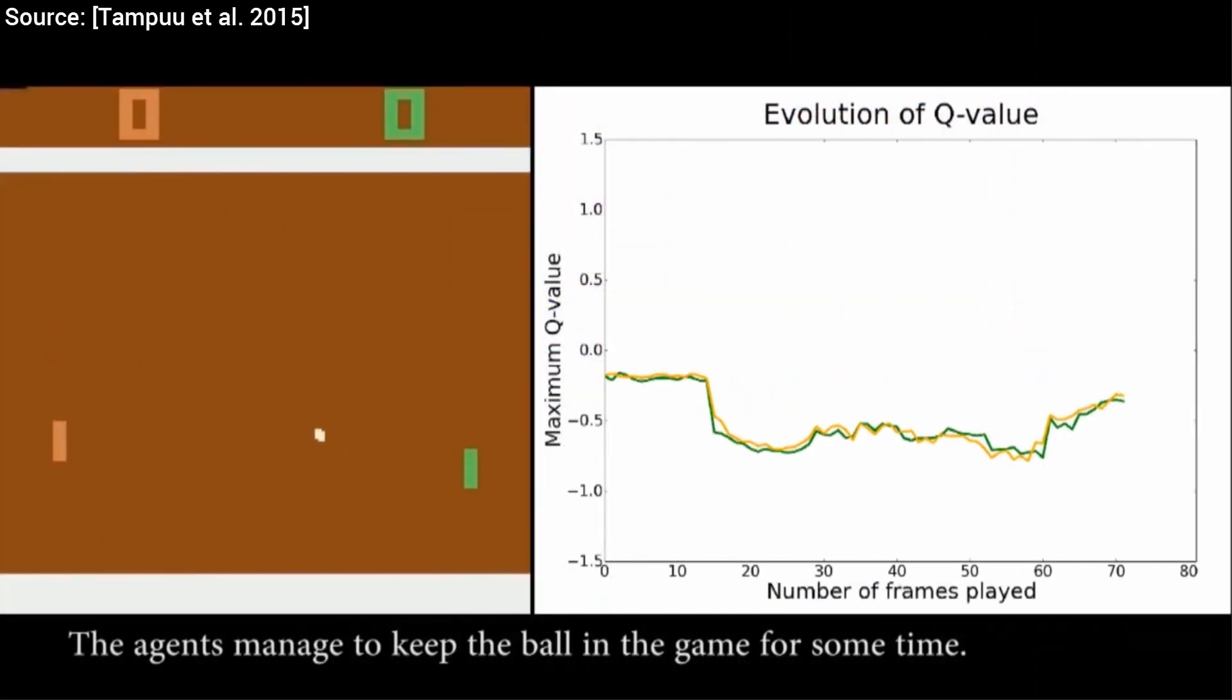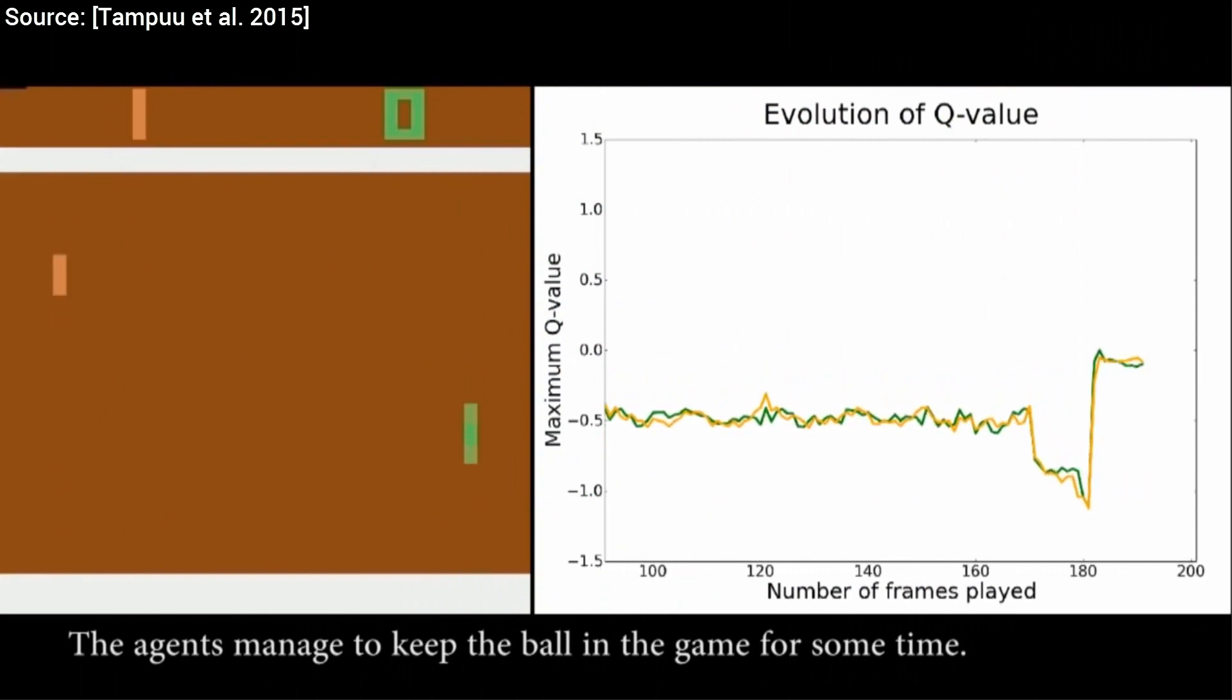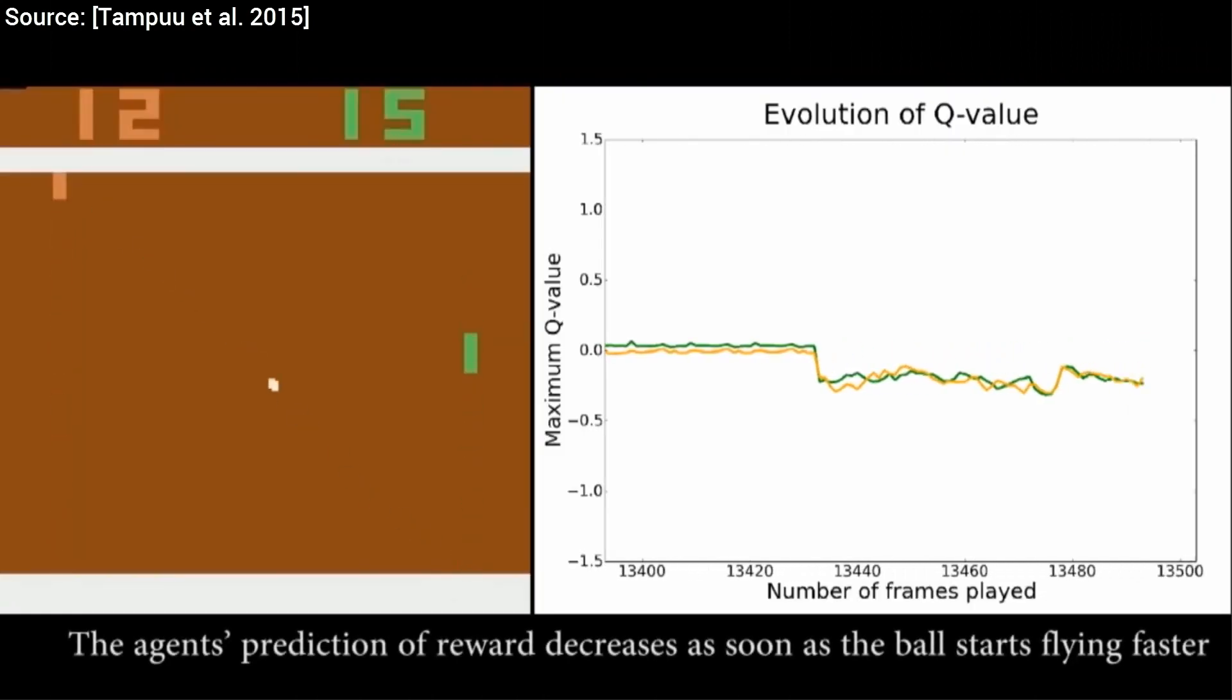Here is another application where a computer algorithm that we call Deep Q Learning plays Pong against itself and eventually achieves expertise.